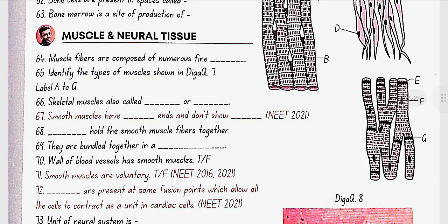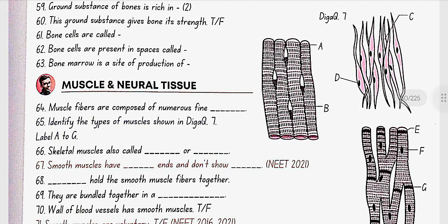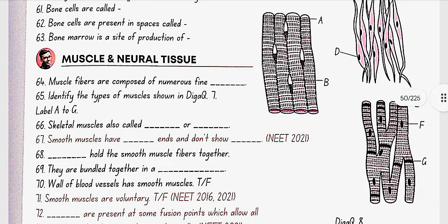Muscle and neural tissue. Muscle fibers are composed of numerous fine myofibrils. Identify the types of muscles shown in diagram 7, labeled A to G. Here in diagram 7: X is the skeletal or striated muscle tissue where A are the striations, B is nucleus. Y is the smooth muscle tissue where C is the smooth muscle fibers, D is the nucleus. Z is the cardiac muscle tissue where E are the striations, F is the nucleus, G are the junctions between the adjacent cells.